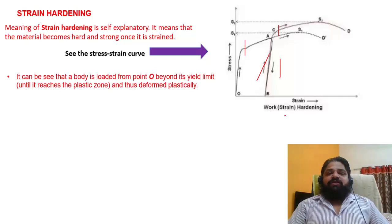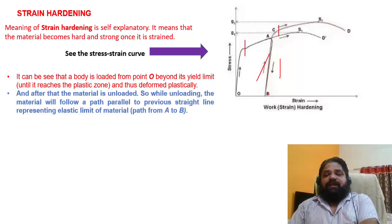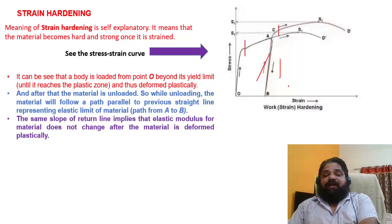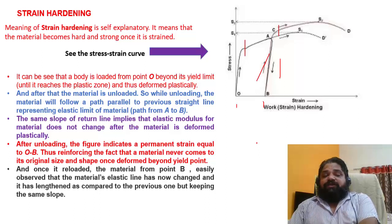It can be seen that the body is loaded from O beyond its yield limit and thus deformed plastically. After that the material is unloaded — while unloading, the material follows a path parallel to the previous straight line representing the elastic limit, point A to B. The same slope implies the elastic modulus does not change after plastic deformation. After unloading, there is a permanent strain, reinforcing that a material never returns to its original size once deformed beyond the yield point.